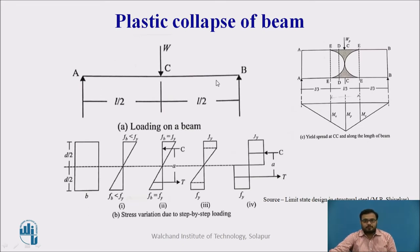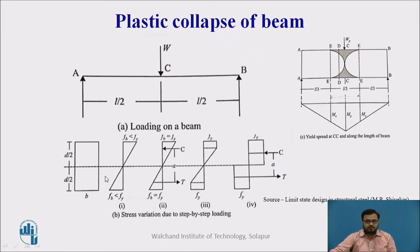This is a simply supported beam subjected to one point load at the center, that is L/2 from each end. Figure A represents the loading on the beam. Figure B represents the stress variation due to step-by-step loading. This is the cross-section of the beam, where B is the width and D is the depth.